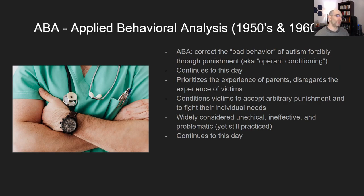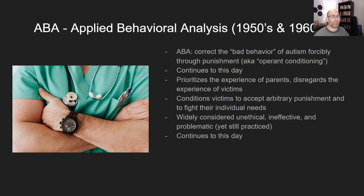Fast forward to the fifties and sixties: the development of ABA, or Applied Behavioral Analysis, is super problematic. It focused on correcting the so-called bad behavior of autism forcibly through punishment — or what they euphemistically called operant conditioning. Basically, if there was a behavior your parents didn't like, you would be coerced into stopping it, whether it was echolalia — verbally repeating things — or stimming or whatever else. This prioritizes the needs of parents rather than the needs and emotions of the autistic person. Many people who have gone through ABA consider themselves victims and say it was a very traumatic experience.